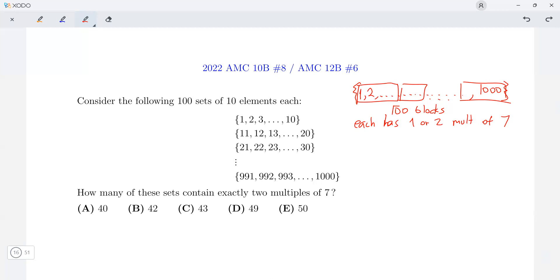Okay, so suppose a of them have exactly one multiple of 7, and b of them have exactly two multiples of 7.